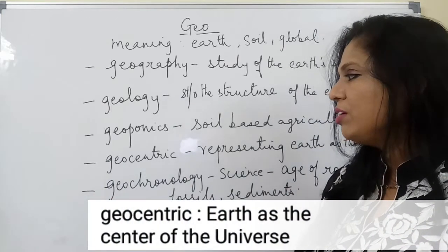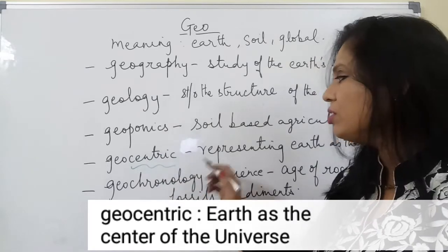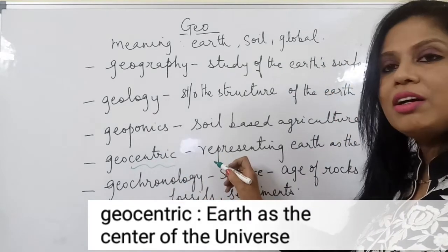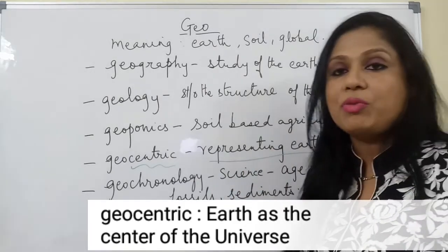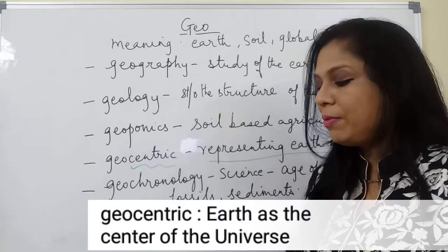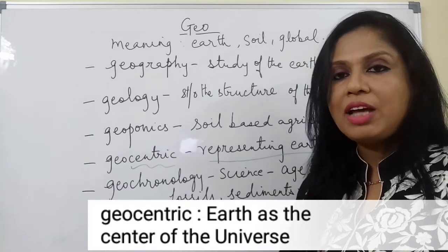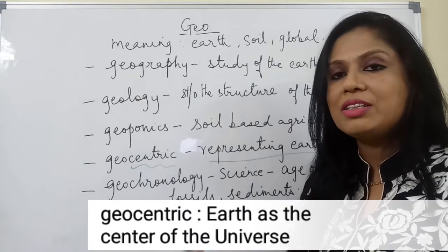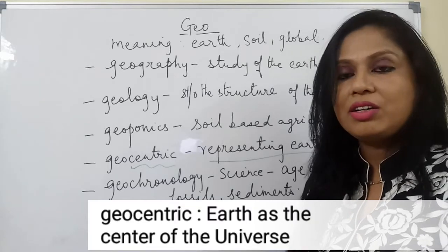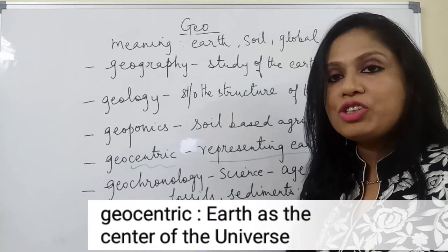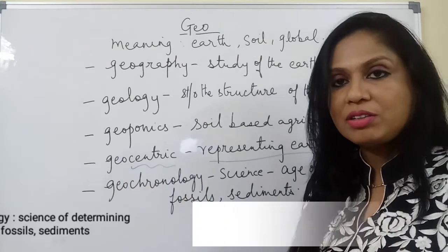The word geocentric — 'centric' comes from the word center. So geocentric means representing earth as the center of the universe. The older theory showed that earth was the center and all the planets and even the sun revolved around the earth. That theory is known as the geocentric theory.